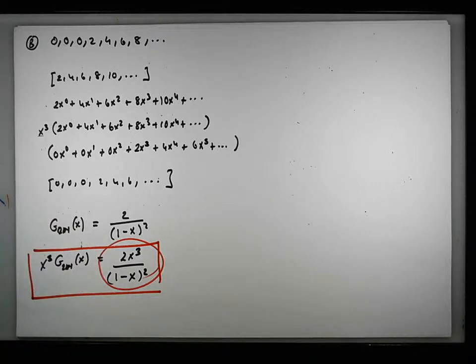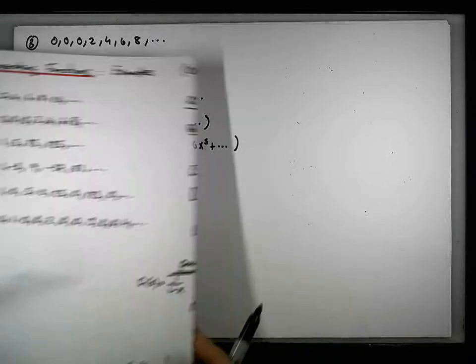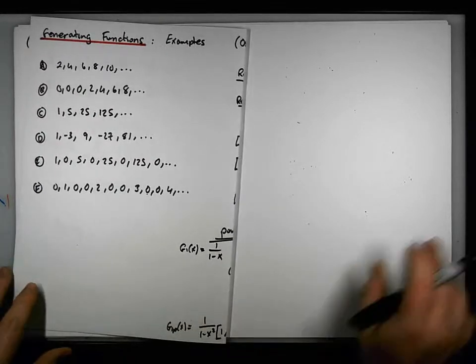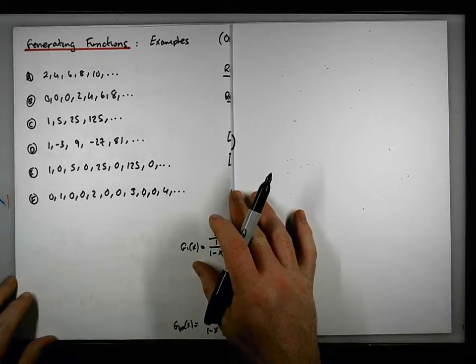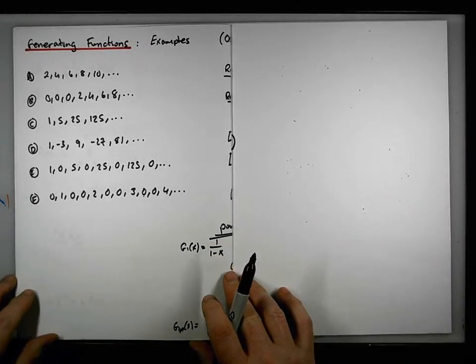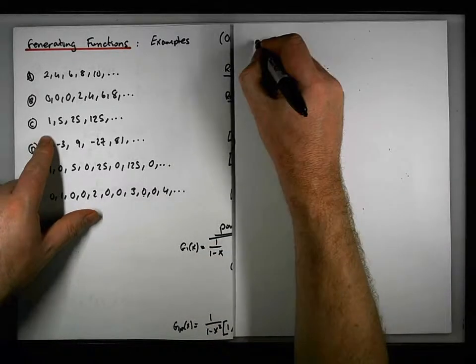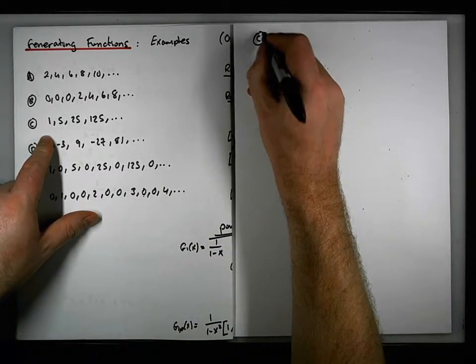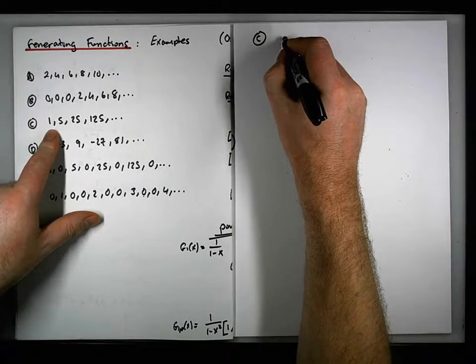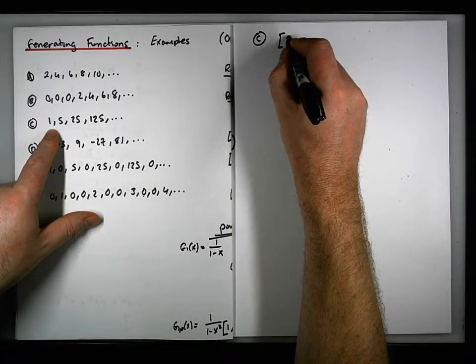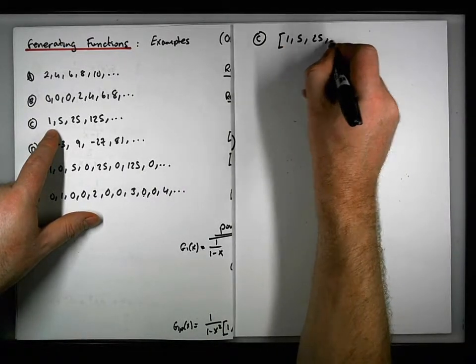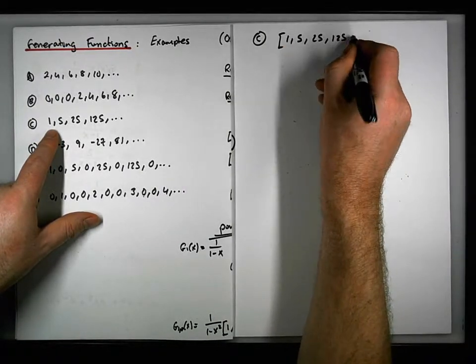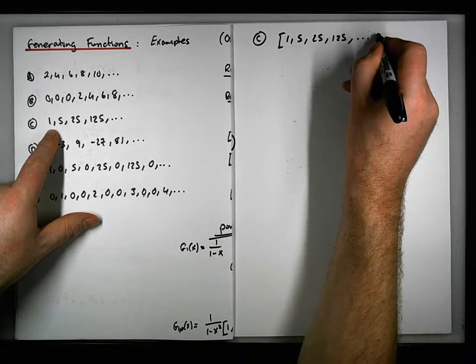We're going pretty fast through these. Let's have a look now at what we also have. So now what we have is part C. The sequence that we're interested in is 1, 5, 25, 125, and so on.